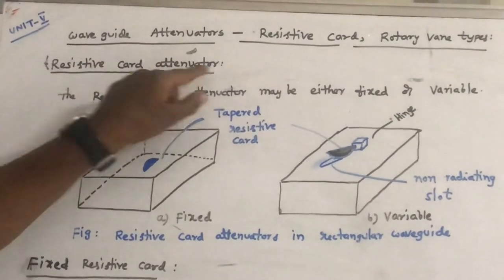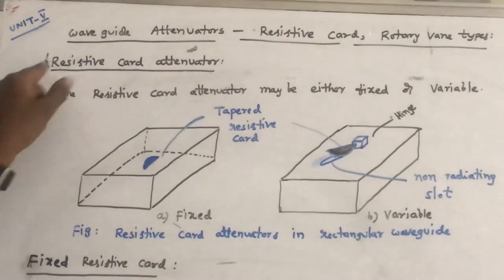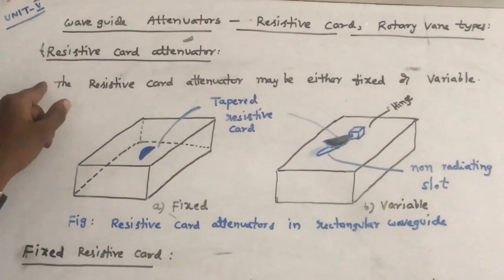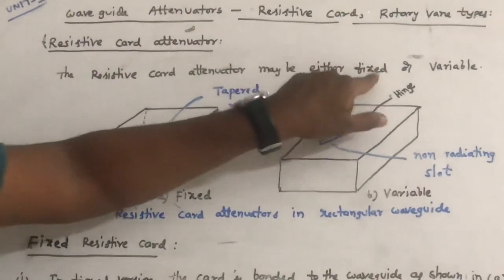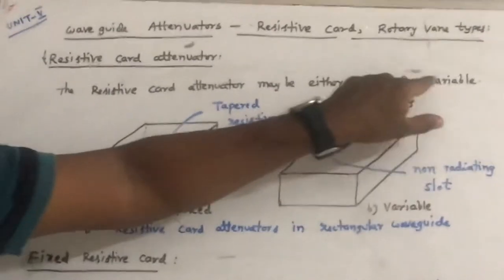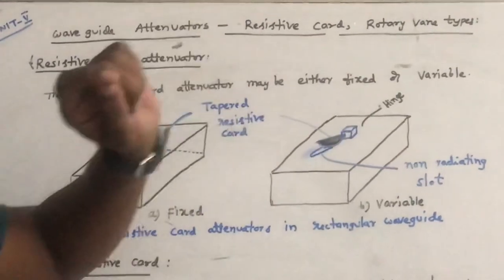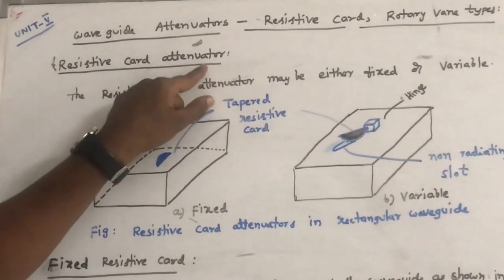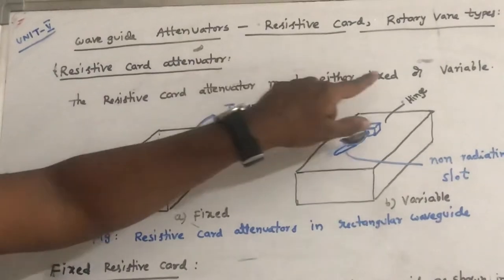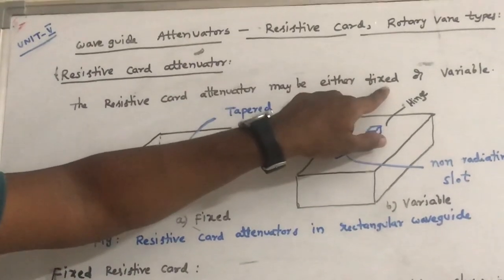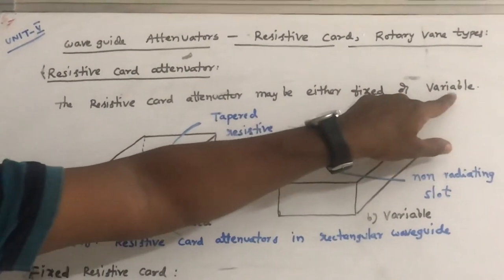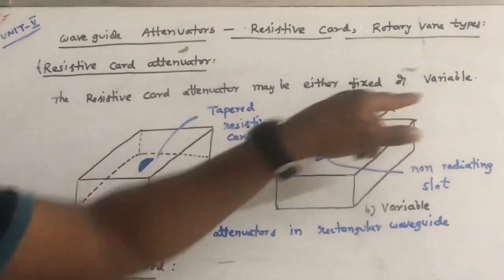Let us see the resistive cord attenuator. The resistive cord attenuator may be either fixed or variable. There are two kinds: fixed resistive cord attenuator and variable resistive cord attenuator.